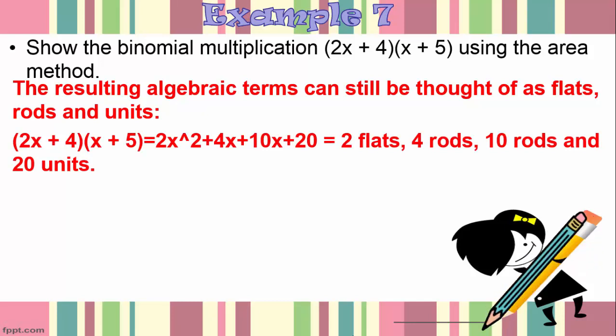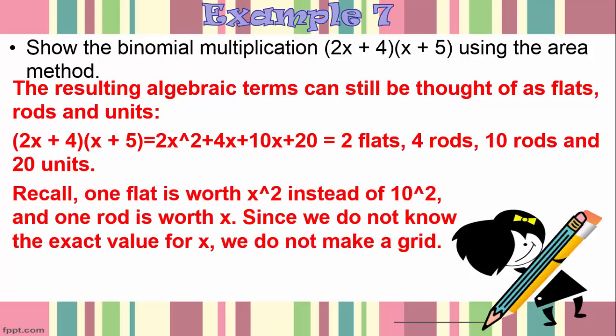2x plus 4 times x plus 5 is equal to 2x squared plus 4x plus 10x plus 20. This means 1 flat is worth x squared instead of 10 squared, and 1 rod is worth x instead of 10. Since we do not know the exact value of x we do not make a grid.